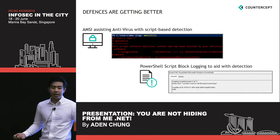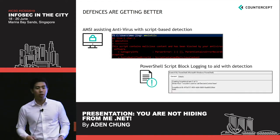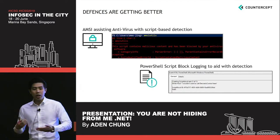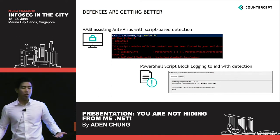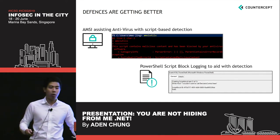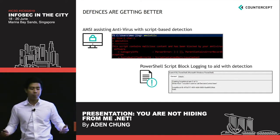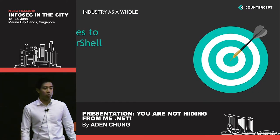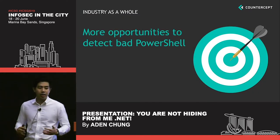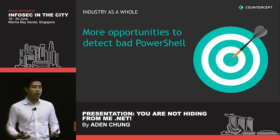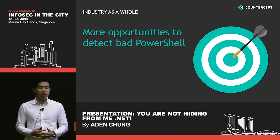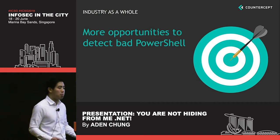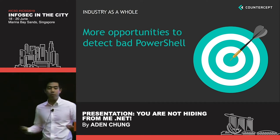Another defense we have is PowerShell script block logging, which can also aid defenders. Any commands entered within a PowerShell console will be logged within event ID 4104 for later versions of PowerShell. So to summarize what we've discussed: as an industry as a whole, we have gotten better. We are given more opportunities to detect malicious PowerShell, and I think we deserve a pat on our backs.